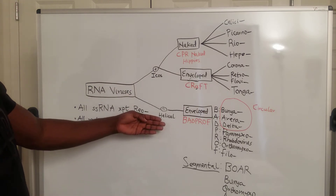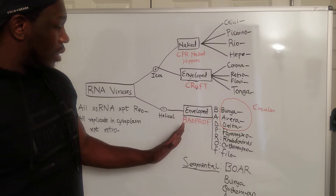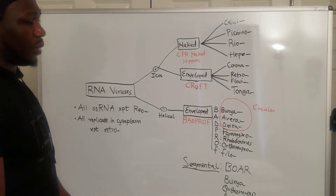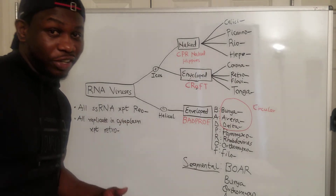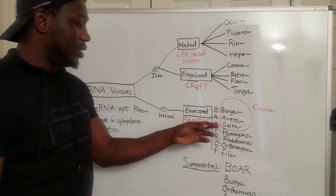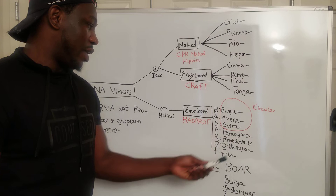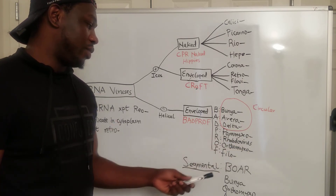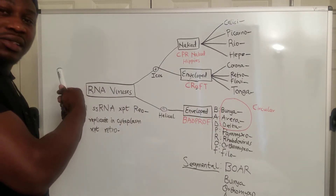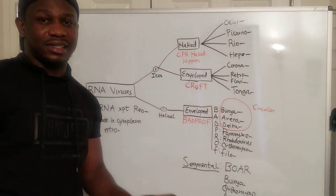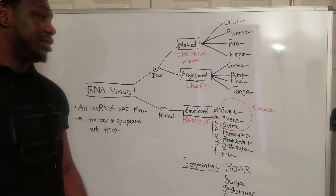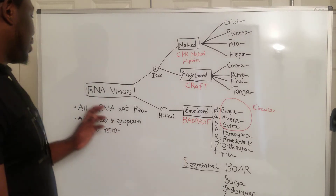Now for the negative RNA viruses — they are all helical and they are all enveloped. There are no naked negative RNA viruses. Remember them using the mnemonic 'Bad Prof': B is bunyavirus, A is arenavirus, D is delta virus, P is paramyxovirus, R is rhabdovirus, O is orthomyxovirus, and F is filovirus. Note that bunyavirus, arenavirus, and delta virus are circular RNA viruses — all circular RNA viruses are negative stranded and enveloped.